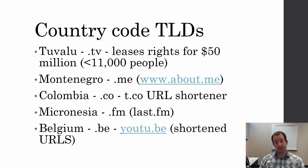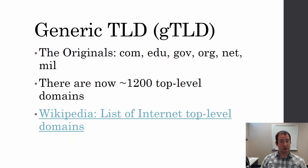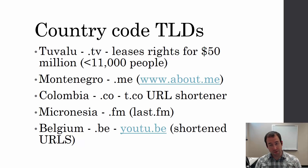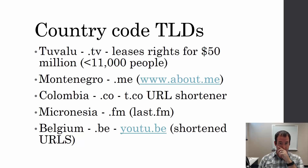Another interesting thing: when we have top-level domains, we also have country code top-level domains. So there are generic top-level domains for everybody, and country code top-level domains for each country. Every country in the world got their own top-level domain that they could do with what they wanted.